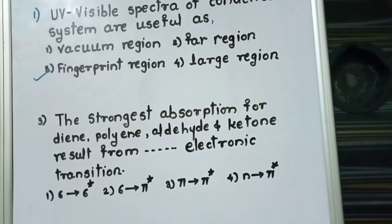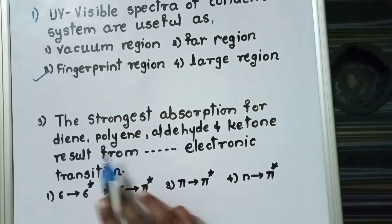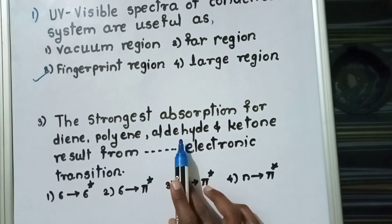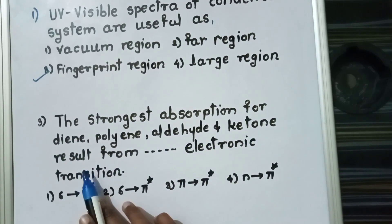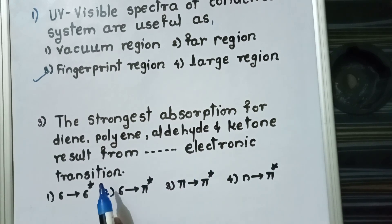Third question is the strongest absorption for diene, polyene, aldehyde, and ketone result from electronic transition.